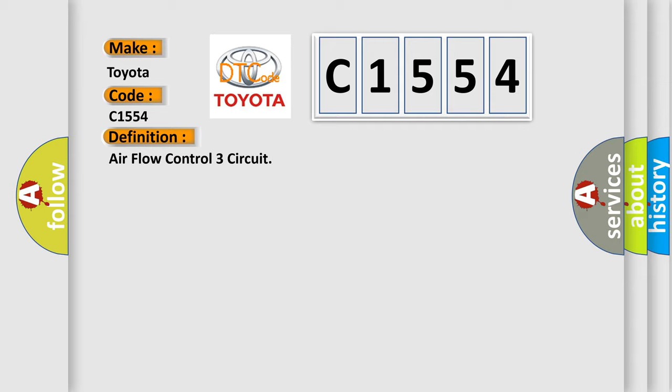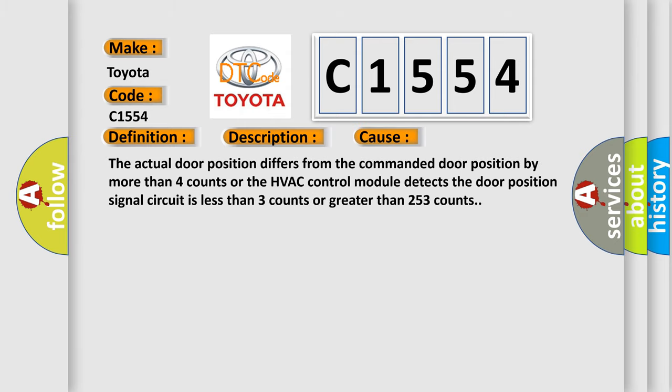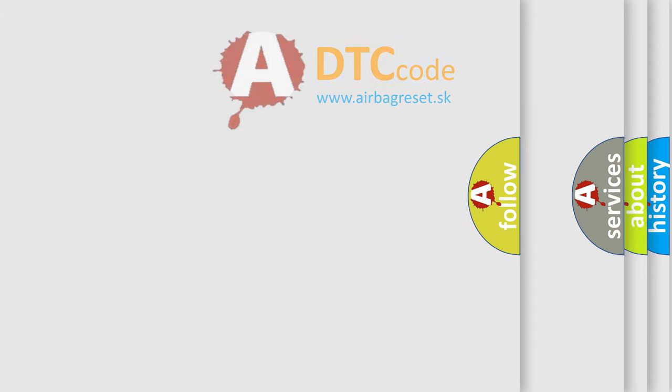The basic definition is: air flow control three circuit. The ignition is on and the HVAC module is on. This diagnostic error occurs most often in these cases: the actual door position differs from the commanded door position by more than four counts, or the HVAC control module detects the door position signal circuit is less than three counts or greater than 253 counts.